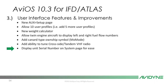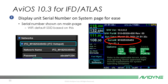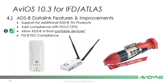Displaying the unit serial number on your system page: as I mentioned with the new Leo WiFi SSID naming, we put your serial number right on your software status in the system tab. Previously you had to go back into maintenance mode or physically pull the box from the panel to find it. Now it's right there in flight mode — easy to get — and it shows up as your SSID for your wireless.